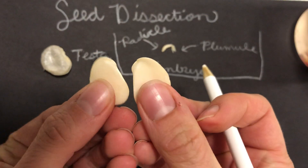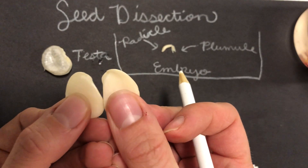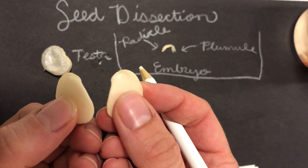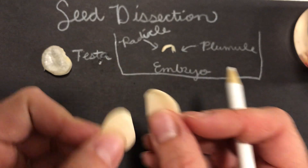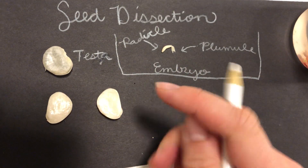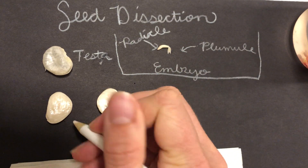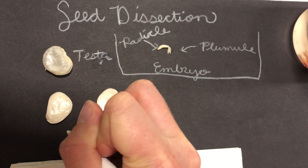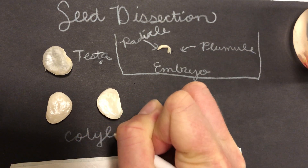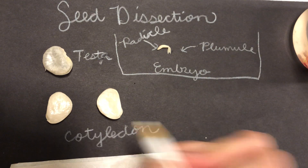Right here we have the cotyledons. The word cotyledon comes from a Greek word 'cotyledon', which means cup-shaped hollow. The job of the cotyledon is to provide the food for the embryo — for the baby plant. So we'll label this cotyledon.